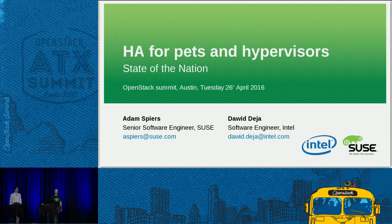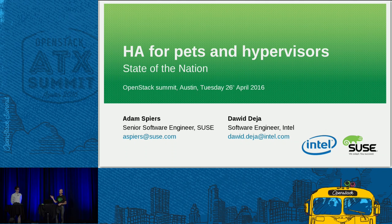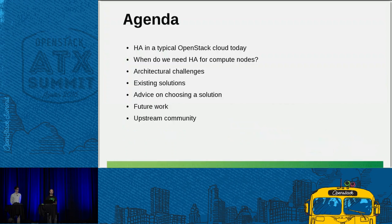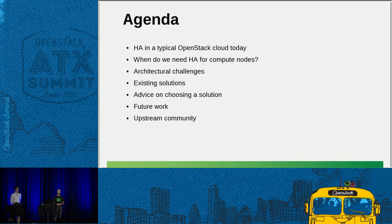We're going to talk about high availability for pets and hypervisors and give you a state-of-the-nation overview of what's happening in the OpenStack world. My name is Adam Spiers, I'm a software engineer at SUSE specializing in high availability and OpenStack, and this is my colleague David Dea from Intel who has a similar area of expertise. Today we'll quickly look at where OpenStack is currently in terms of high availability, then we'll look at when we need high availability for the compute node plane — which is a slightly controversial topic — and we'll look at some of the architectural challenges, go through several existing solutions, give you hopefully completely unbiased advice on choosing a solution, and talk about stuff coming in the near future and how you can get involved with the upstream community.